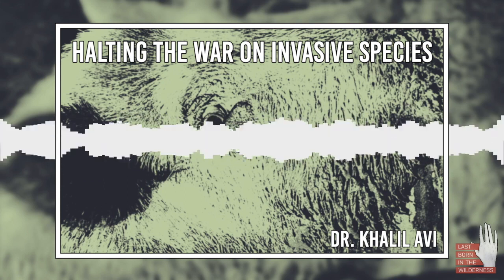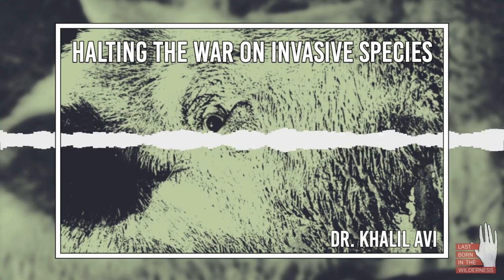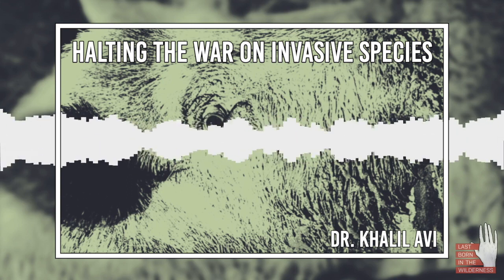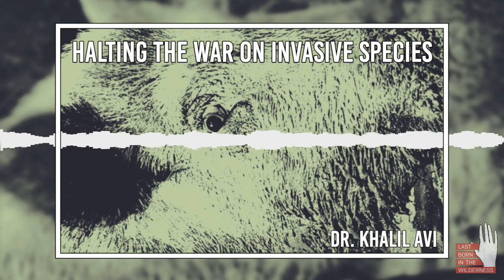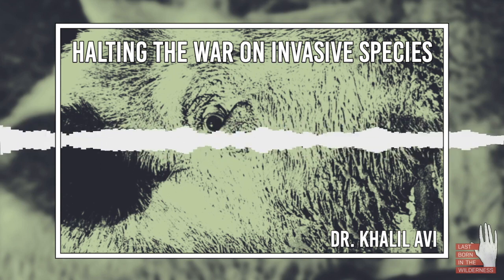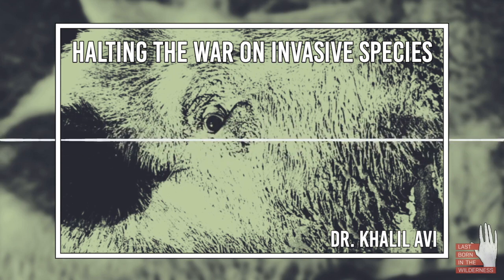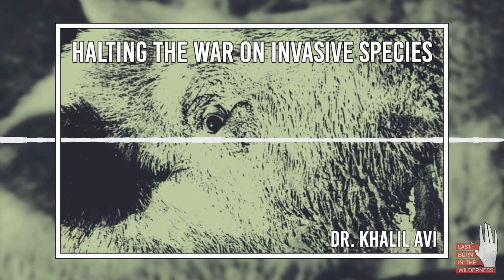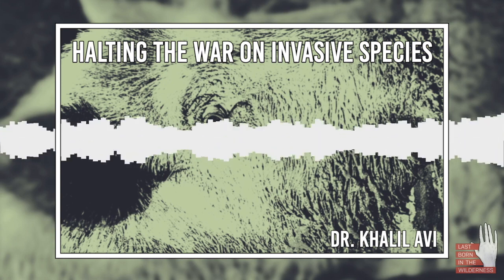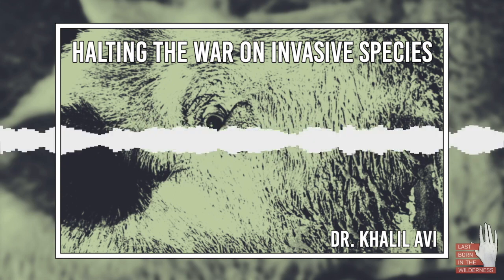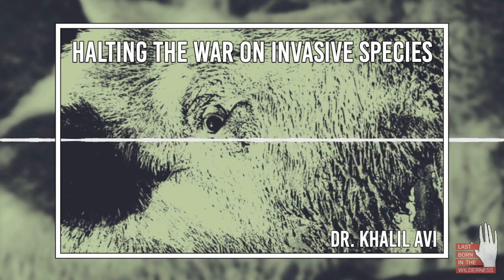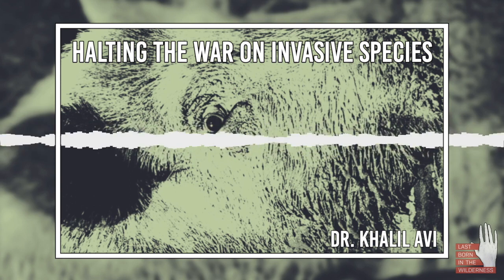What is commonly understood as what invasive species are — how do we normally define them? And then from there we can break down, as you say in the title of your article 'Don't Shoot the Messenger,' the framing that so-called invasive species are actually indications of something bigger happening. So for the very beginning: what do we commonly understand invasive species to be, and what do they do to ecosystems and bioregions?